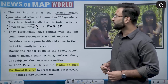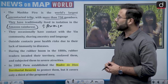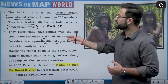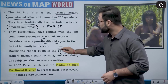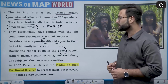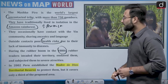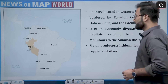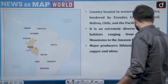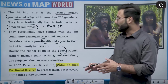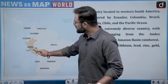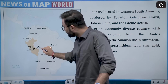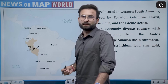The Mashko-Piro occasionally have contact with the Yine community, sharing ancestry and language. Outside contact poses health risks due to their lack of immunity, as herd immunity has not yet developed. During the rubber boom in the 1980s, rubber traders invaded their territories, enslaved them and subjected them to severe atrocities. In 2002, Peru established the Madre de Dios territorial reserve, located in Peru near the Brazilian border, where the tribe is basically living.